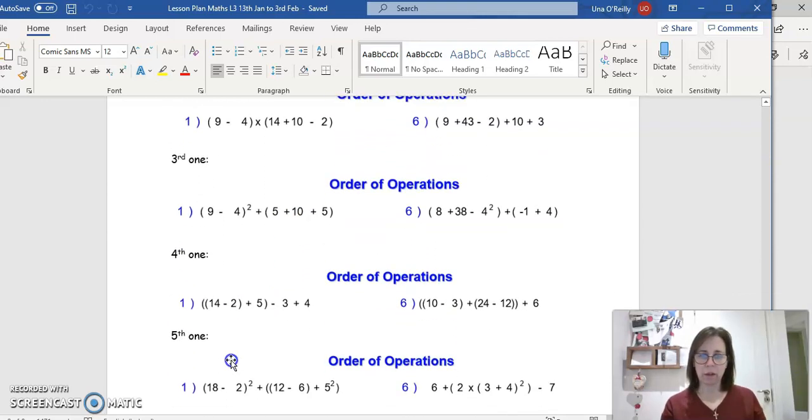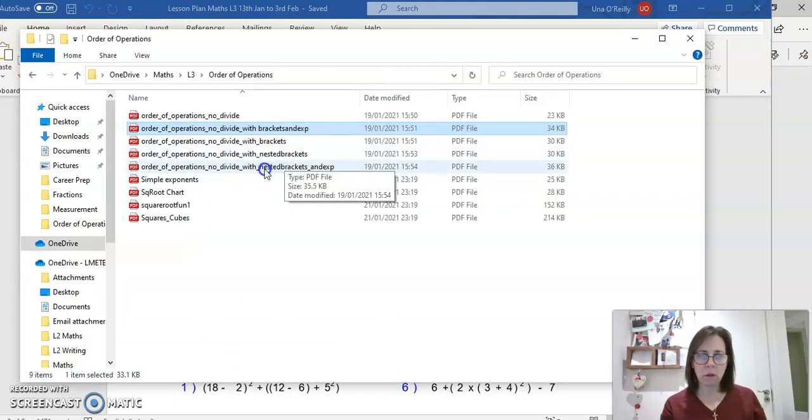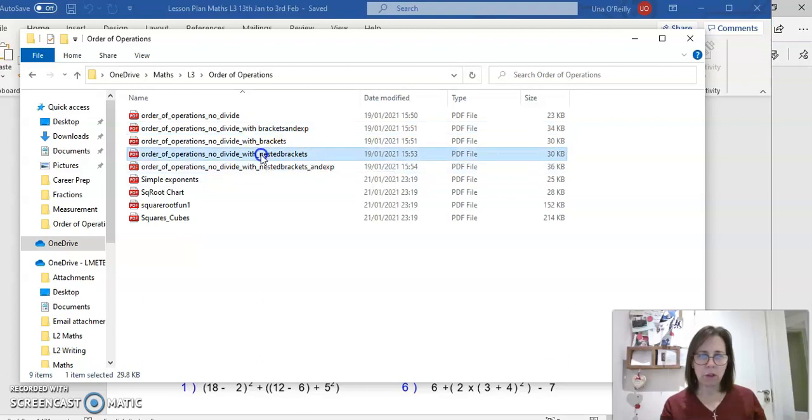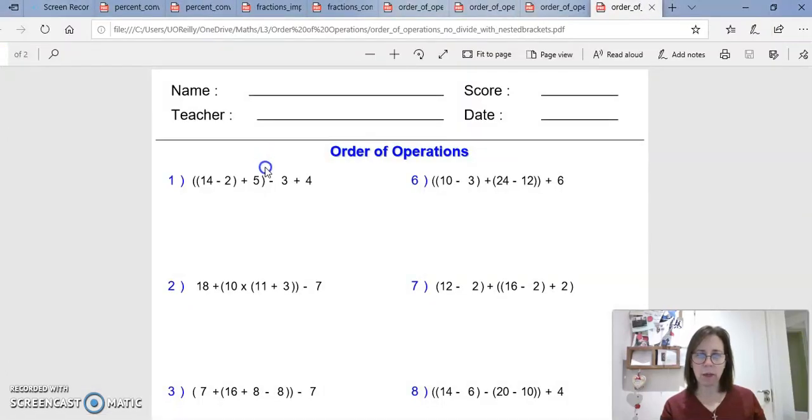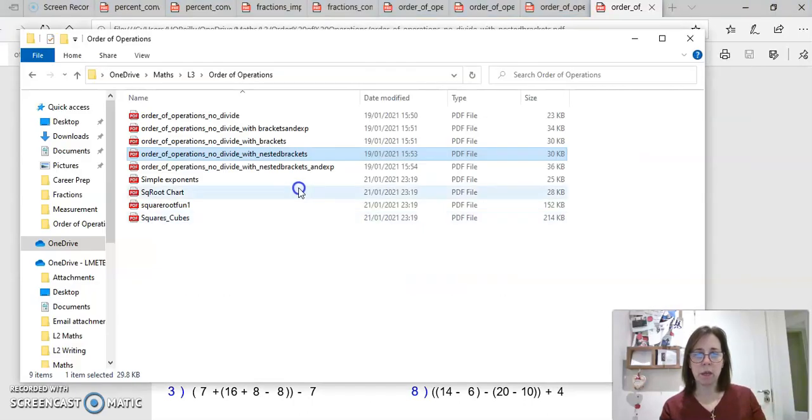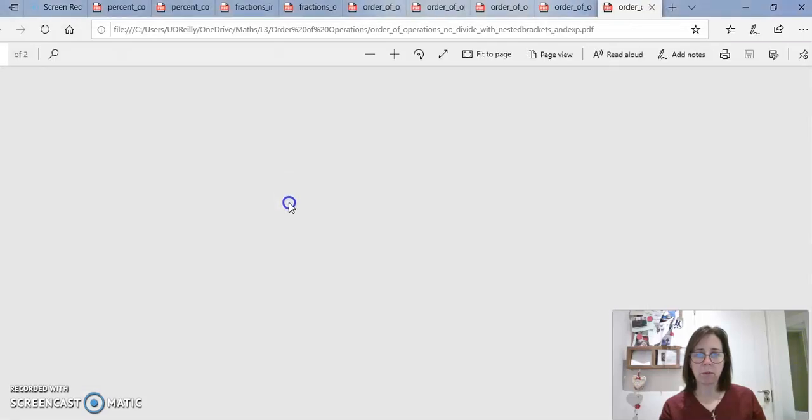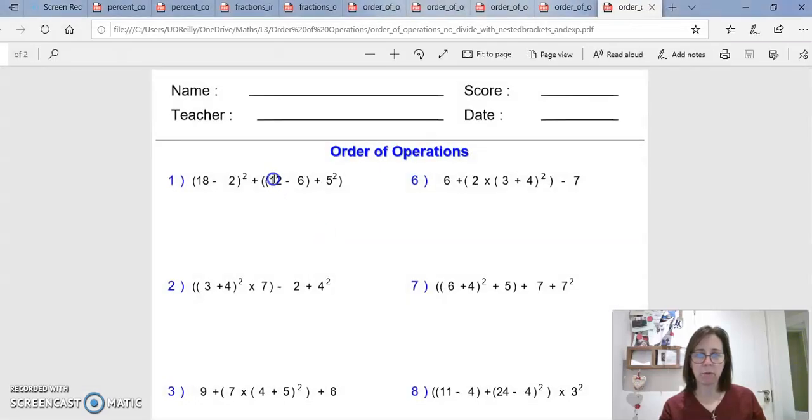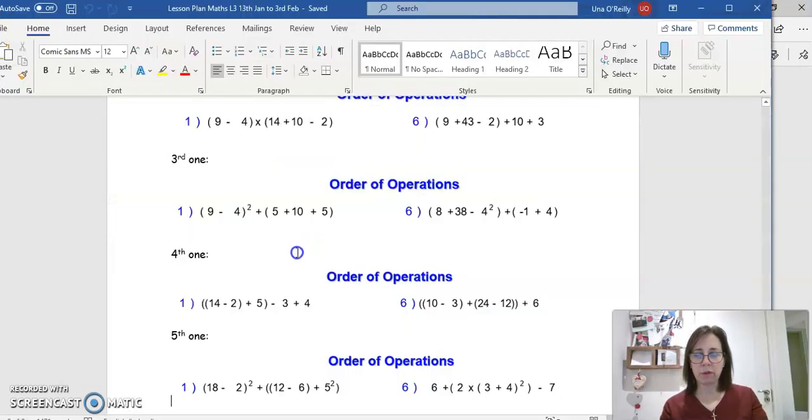The third one is going to be with brackets and exponents. Then you move on and you're going to get some with nested brackets, so you have brackets within brackets. The last one will be nested brackets and exponents, so you have brackets within brackets and exponents. Have a go at those. If you're flying through them, keep going, do them all. If you're struggling, let me know where you're struggling and we can come back to it.